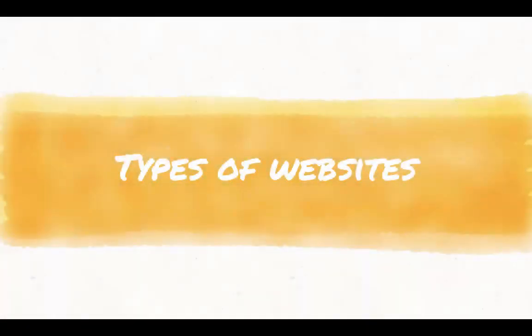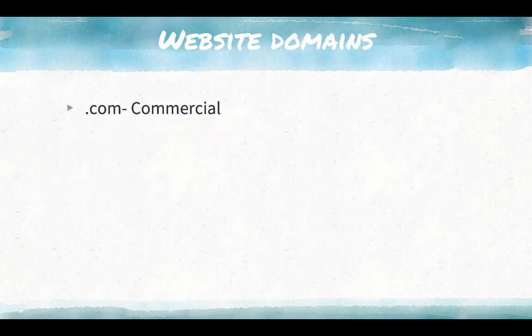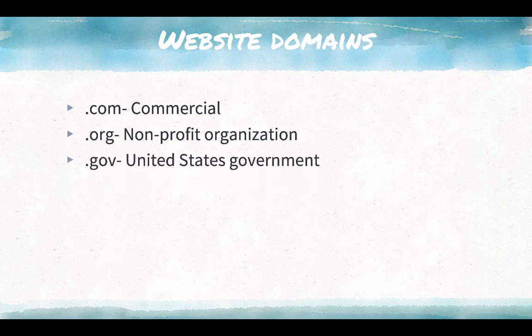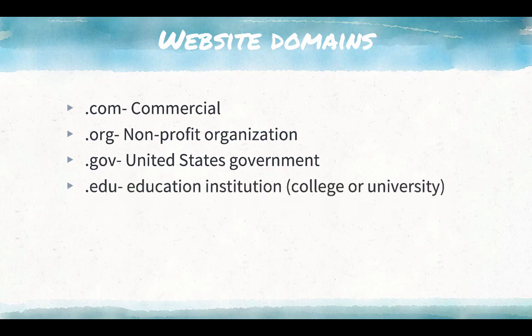First, I'm going to go over different types of websites. There are four main website types that you'll regularly encounter. First is .com, which is for commercial websites. Second is .org, for nonprofit organizations. Third is .gov — these are United States government websites. And fourth is .edu — these are educational institutions, mostly colleges or universities.